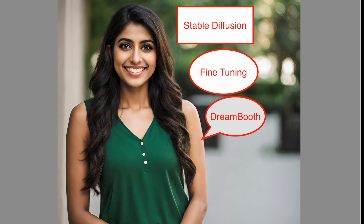Let us see what is stable diffusion. Stable diffusion is an AI-based image synthesis model developed by Stability AI and partners, which can generate high-quality images from textual descriptions. It's part of a broader category of models known as diffusion models, which generate images through a process of gradually denoising a random pattern of pixels. The model is particularly good at handling fine details and can be steered towards specific artistic styles or the mimicry of certain aesthetics. Stable diffusion has been widely adopted for various creative and commercial purposes, such as generating art, designing characters, and even creating virtual environments.